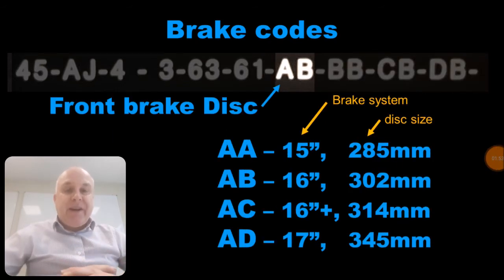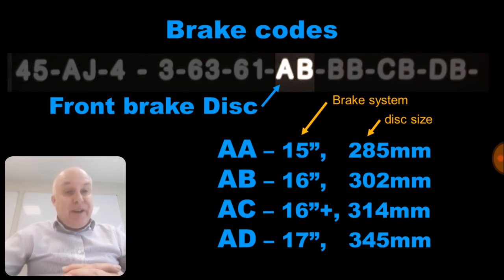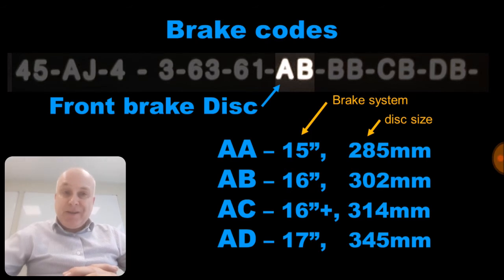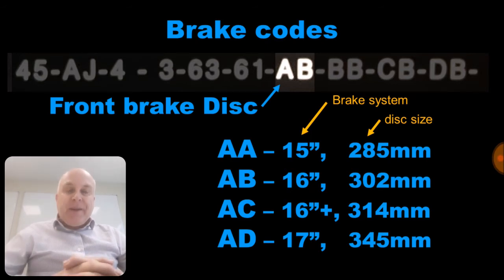The front brake disc code begins with an A and consists of letter pairs AA, AB, AC, and AD, representing the 15-inch brake system 285 millimeter discs, 16-inch brake system 302 millimeter discs, 16-inch plus brake system 314 millimeter disc, and 17-inch brake system 345 millimeter disc respectively.